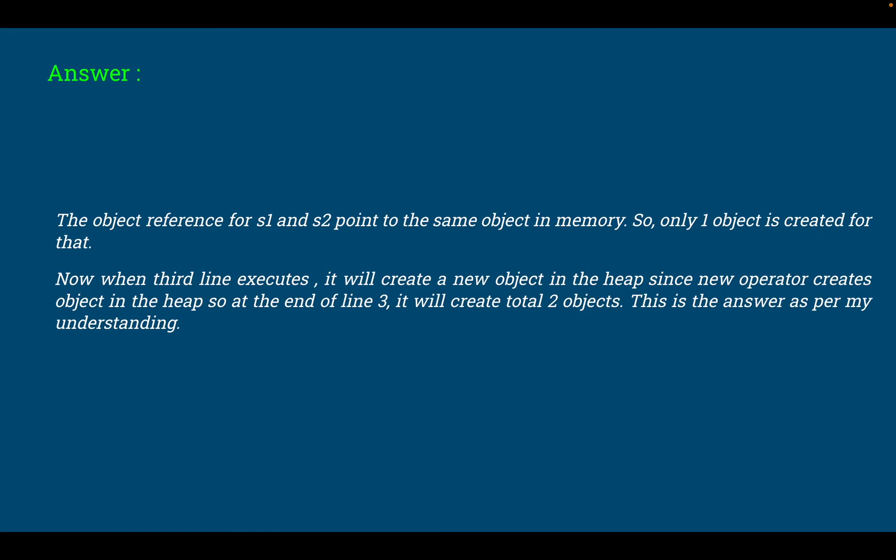The answer to this question is: the object reference for s1 and s2 point to the same object in memory, so only one object is created for that. Now when the third line executes using new operator, it will create a new object in the heap since new operator creates objects in the heap. So at the end of line three there will be total two objects in memory. This is the answer as per my understanding.